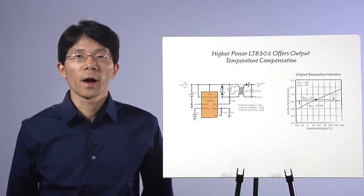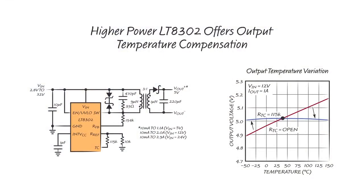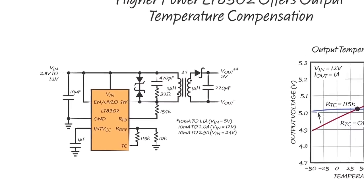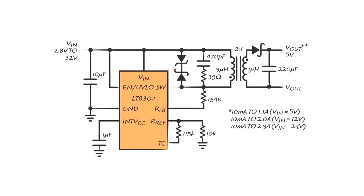Here is another 5-volt isolated flyback converter from 2.8-volt to 32-volt input using the higher power LT8302, another part in our Low IQ No Opto Flyback family. For our No Opto Isolated Flyback ICs, the output diode forward voltage has a negative temperature coefficient, about minus 2 mV per degree C to minus 1 mV per degree C,